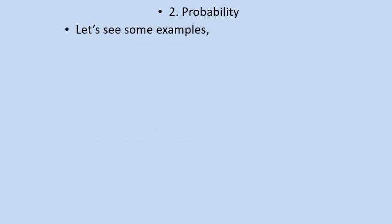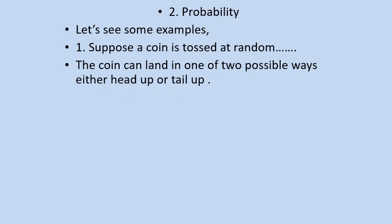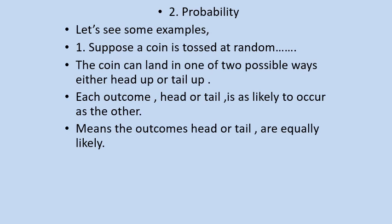Now what is probability? Let's see some examples. Suppose a coin is tossed at random. The coin can land in one of two possible ways, either head up or tail up. You might have seen during matches also, coin is tossed and either head or tail will come up. We don't know for certain whether head or tail will come. Each outcome — head or tail — is as likely to occur as the other, meaning chances of both head or tail are the same. That is known as equally likely outcomes.